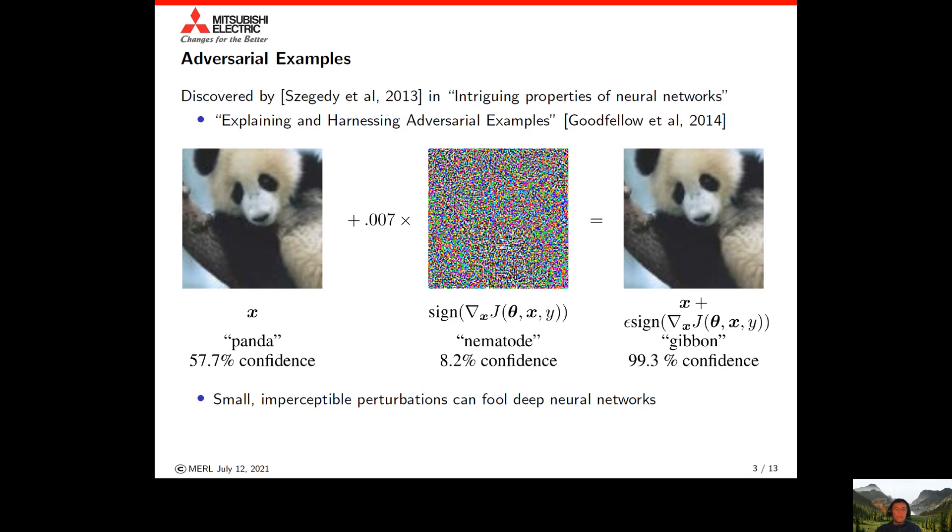On the left is the original image of a panda. If you put this through a state-of-the-art image recognition model, it'll say it's a panda with fairly high confidence. But if you craft some perturbation that's very small, represented by this middle image scaled by 0.07, and add it to the image, you produce the result on the right, which is visually indistinguishable from the original. But now, the model thinks it's a gibbon with 99% confidence.